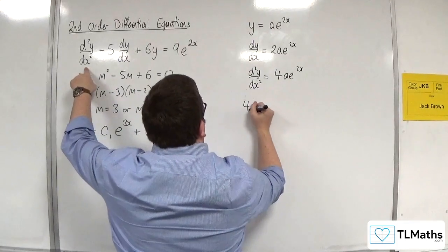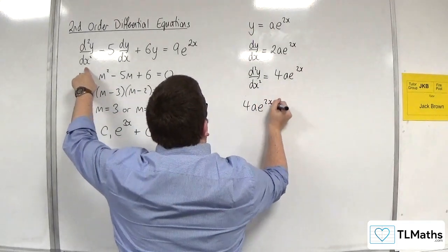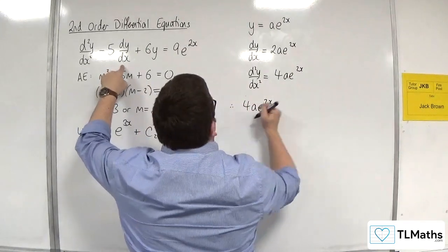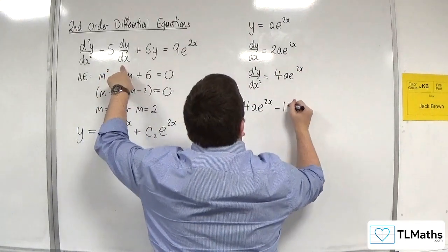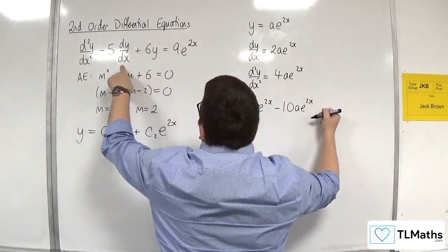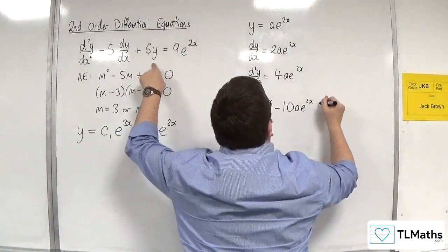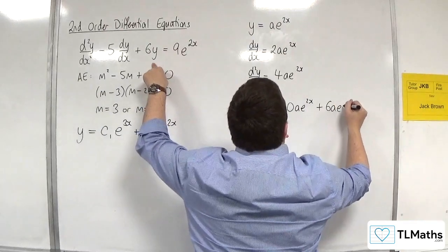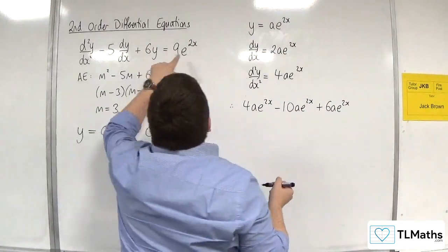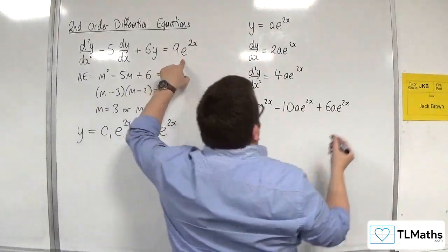We're going to get 4ae to the 2x, take away 5 lots of this one, so take away 10ae to the 2x, then 6 lots of this one, so plus 6ae to the 2x, and that's got to be equal to the 9e to the 2x.